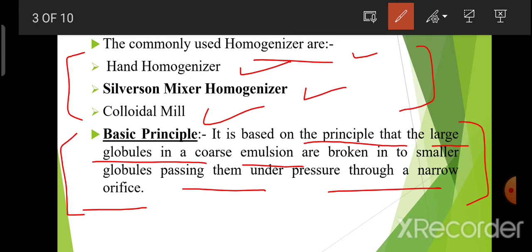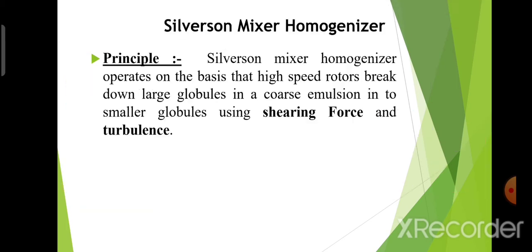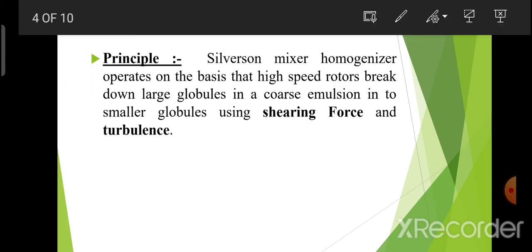Large globules जो होंगे coarse emulsion के, उनको smaller globules में break किया जाएगा by passing them — उनको narrow orifice से pass करके, pressure apply करके — जो large globules होंगे उनको smaller globules में convert किया जाएगा।